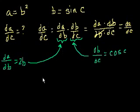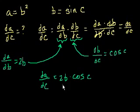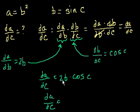So we're done. The derivative of a with respect to c equals 2b times cosine of c. If you don't want the answer to depend on both b and c, you can substitute b equals sine of c. So the derivative of a with respect to c is 2 sine of c times cosine of c.